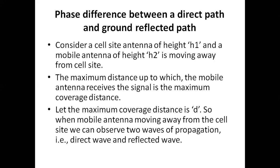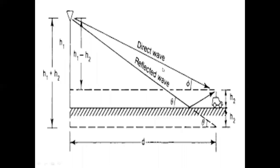The maximum coverage distance is the maximum distance at which the mobile antenna receives the signal from the cell site. Let that maximum coverage distance be small d. The mobile unit moves away from the cell site, and at distance d the mobile unit can still receive signals from the cell site.